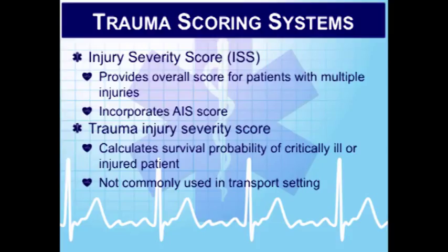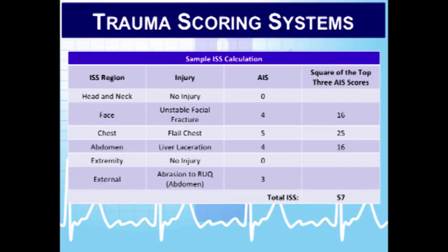The Trauma Injury Severity Score (TRISS) calculates survival probability of critically injured or ill patients using the ISS, revised trauma score, and the patient's age. It is not generally used in the transport setting. Generally speaking, elderly patients tend not to do as well with the same injuries as a younger patient might have.